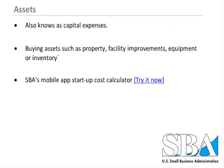Assets, also known as capital expenses or expenditures, are the one-time costs of buying assets such as inventory, property, vehicles, or equipment, as well as making upfront payments for security deposits. These startup assets don't usually qualify for deduction; however, some can be written off through depreciation at tax time. The SBA offers a mobile app that includes a startup cost calculator. Visit www.sba.gov to download this tool.